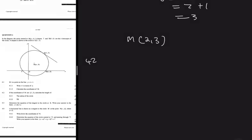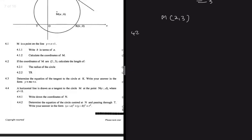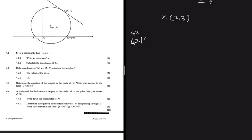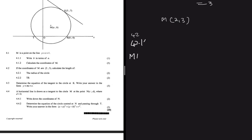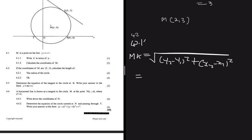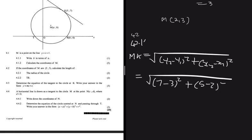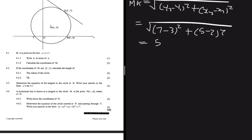Now for 4.2.1: calculate the radius of the circle. We can use MK or MR. Using MK with the distance formula: √[(7 − 3)² + (5 − 2)²] — y₁ is now 3. That gives √[16 + 9] = √25 = 5. So the radius equals 5.